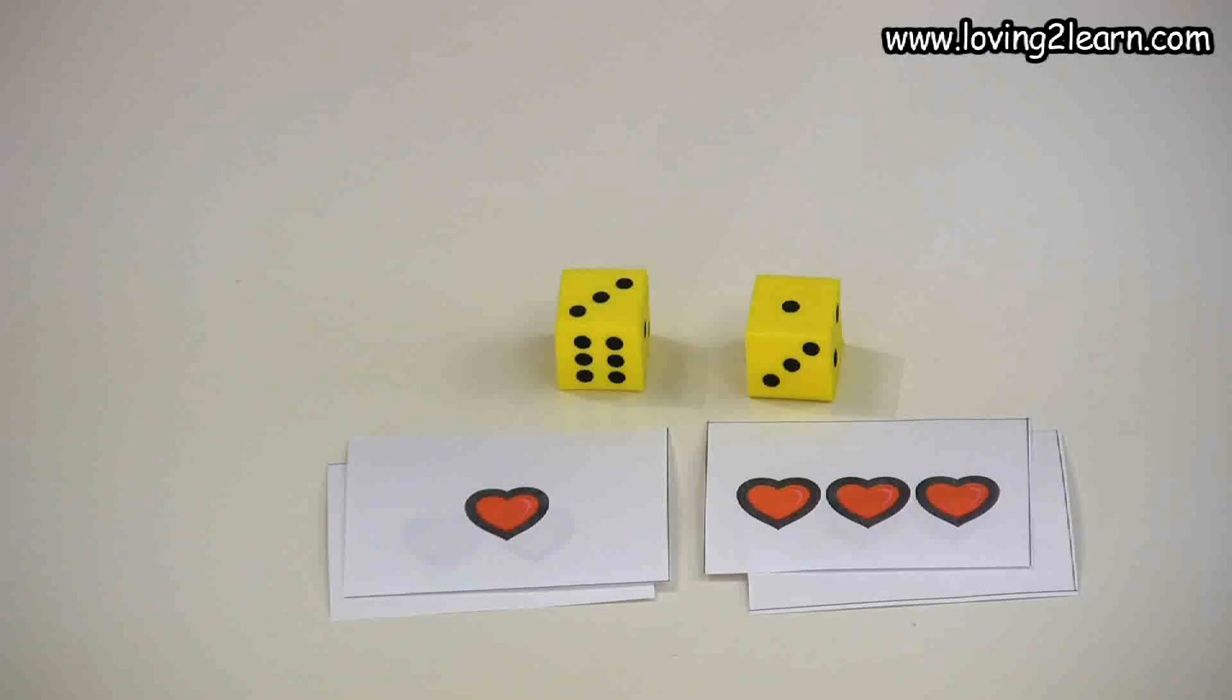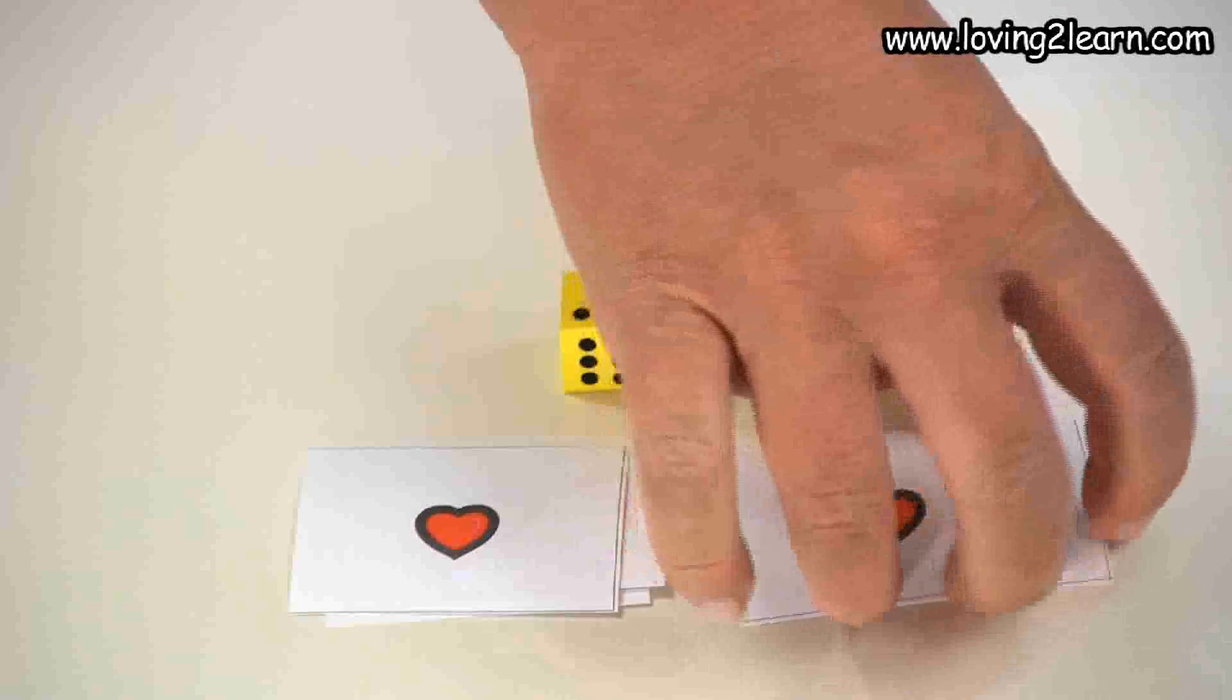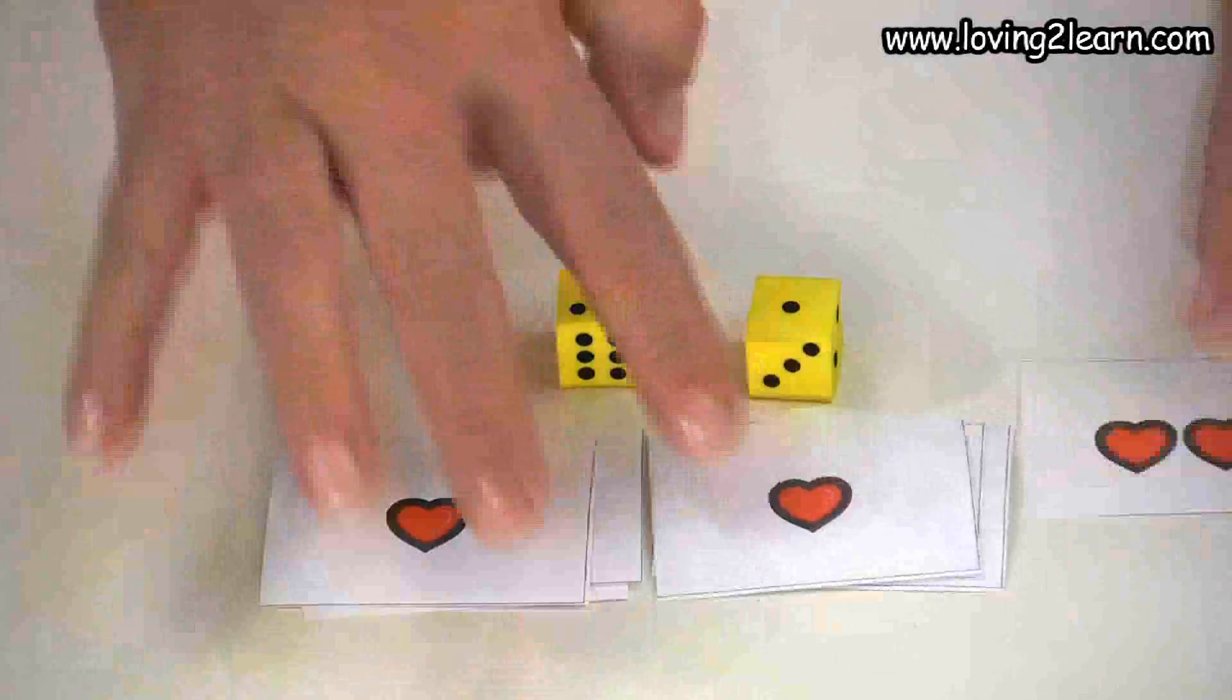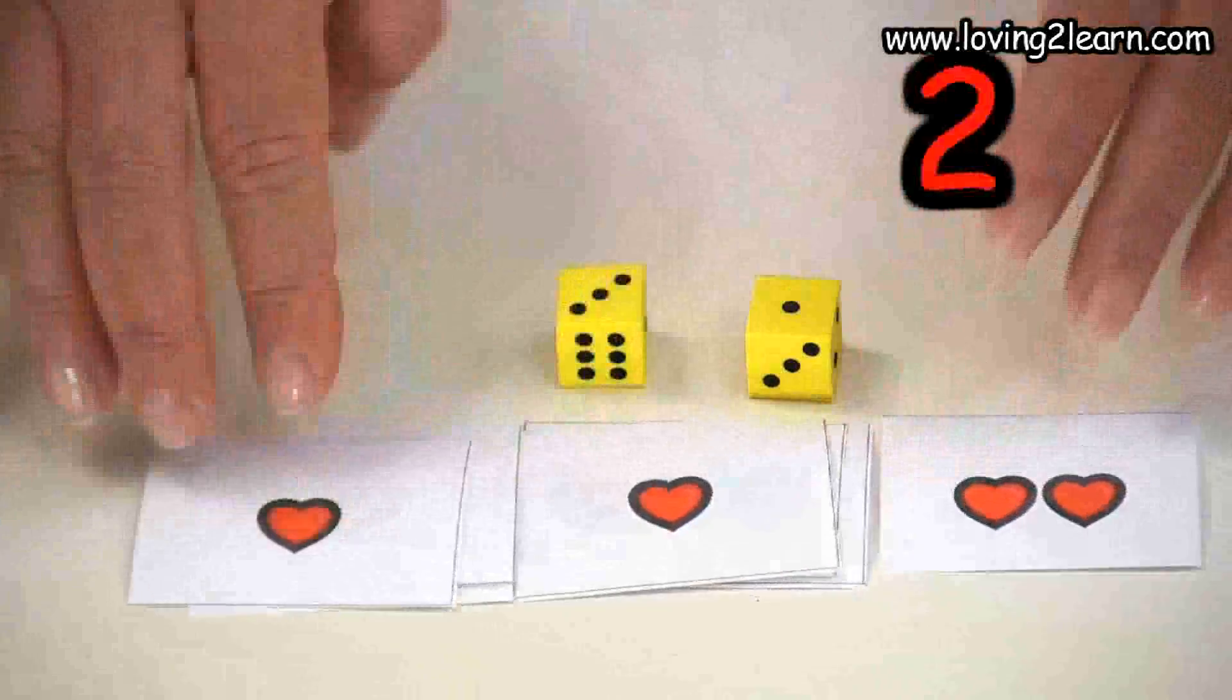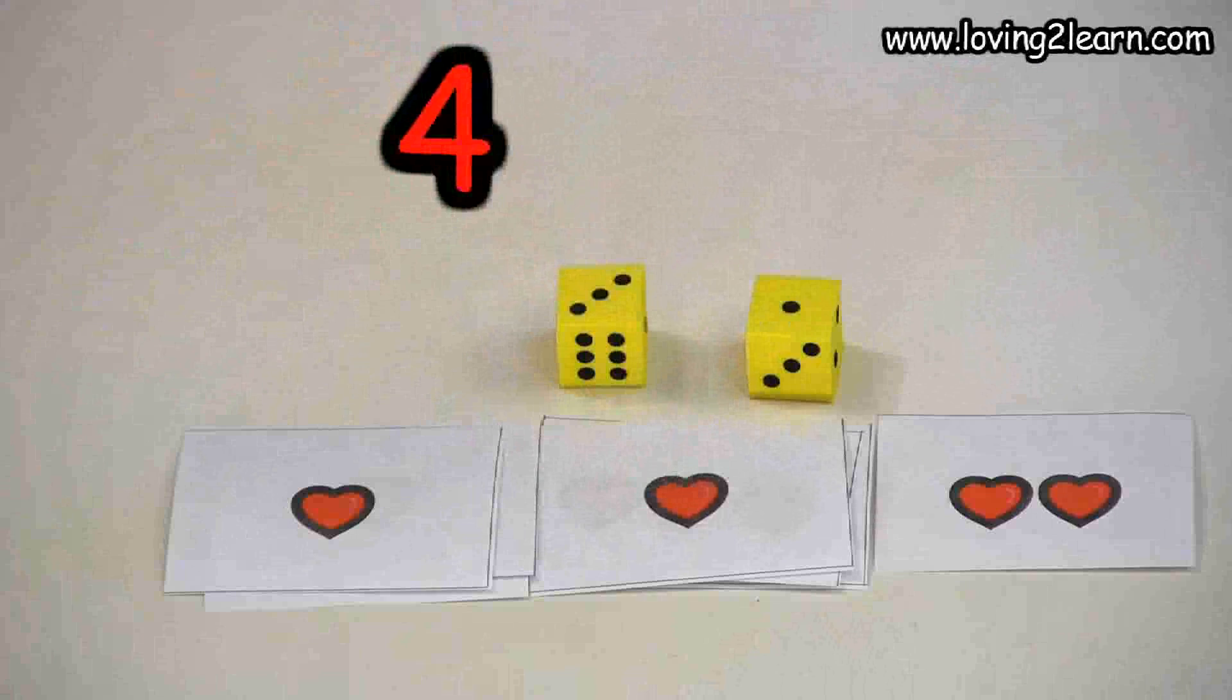We could do one and one, which will equal two, and then we need two more. So two, three, four, which will equal four.